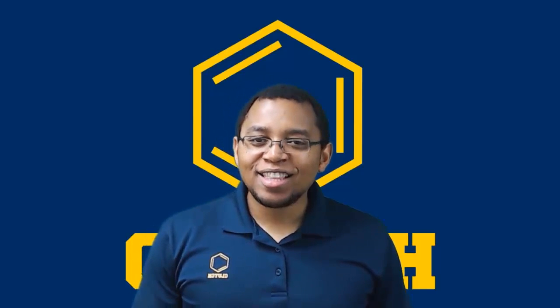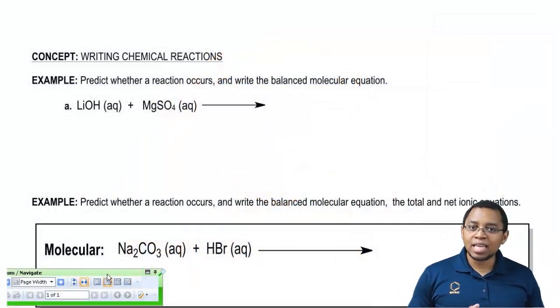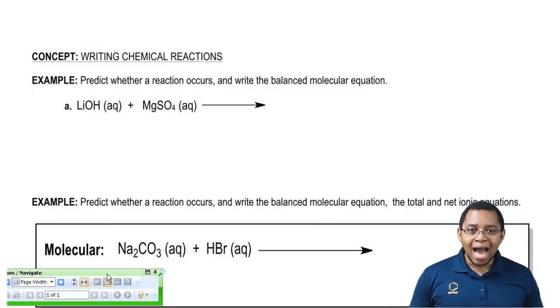Hey guys, welcome back. In this new video, we finally get to see how exactly do we come up with the products in a balanced equation. Now, up to this point, we've been given chemical reactions in which they gave us the reactants and the products. Now it's up to us to figure out how to write those products just from the information they give us for the reactants.